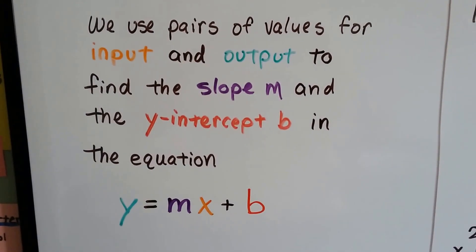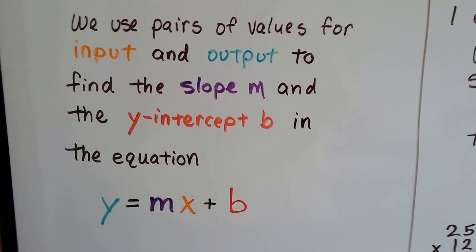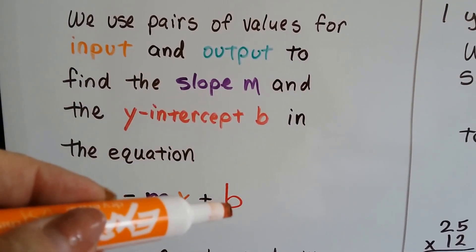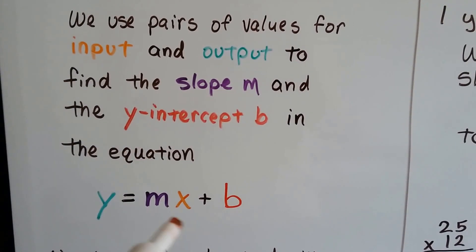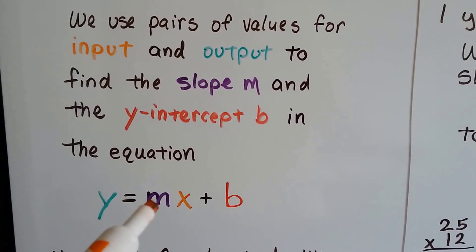If you know me, you know I like to use colors, and they help you see which part is which. You can see right away that the y-intercept b is right here. Here's the input, here's the output, and here's the slope.